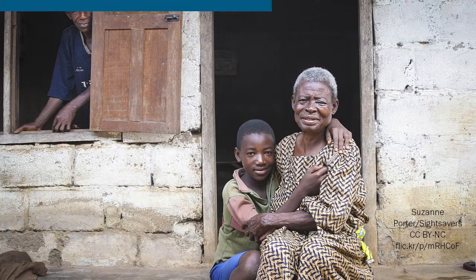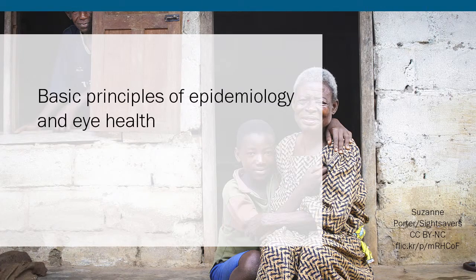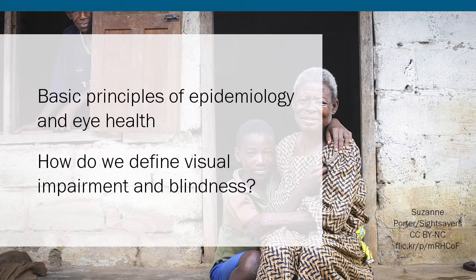In this first week, we will begin by describing some basic principles of epidemiology and the WHO definition for visual impairment and blindness. And then, using this information, we will begin by considering how big is this problem of visual impairment and blindness, where and who is affected by it, and what are the main causes.